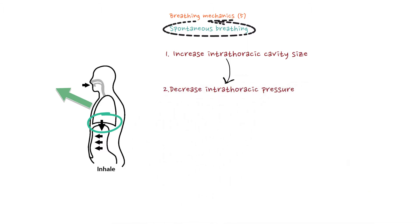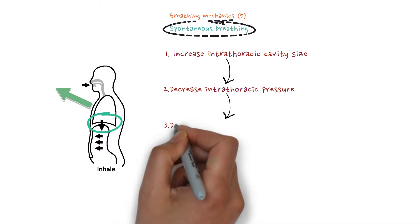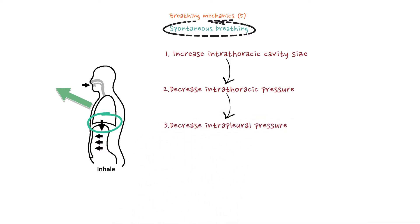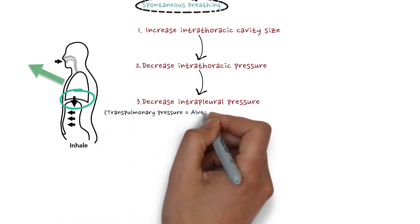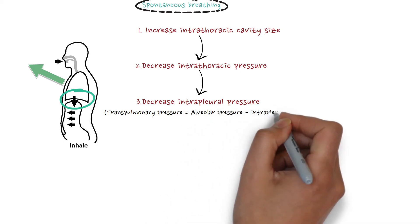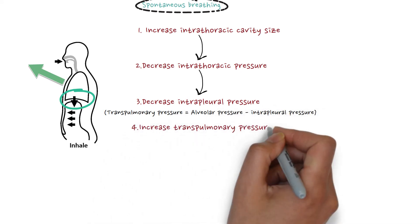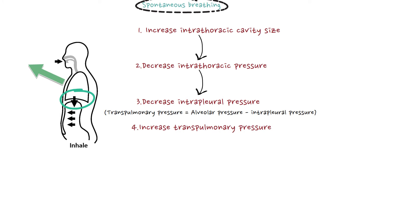The intrathoracic pressure inside the whole thoracic cavity decreases. When there is a decrease in intrathoracic pressure, the intrapleural pressure will also drop — intrapleural pressure follows intrathoracic pressure. When the intrapleural pressure drops, the transpulmonary pressure will increase.